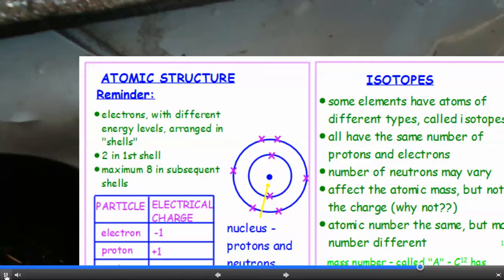Remember there are electrons with different energy levels arranged in shells, with two in the first shell and a maximum of eight in all subsequent shells. And in the centre of the atom we have the nucleus, which is where you'll find the protons and the neutrons.